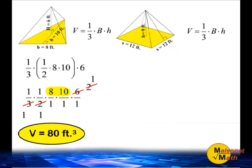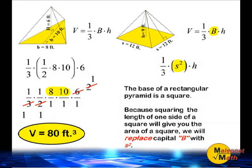Now let's find the volume of the square pyramid. The base of the rectangular pyramid is a square. Because squaring the length of one side of a square will give you the area of a square, we will replace the capital B with s to the second power in our equation.